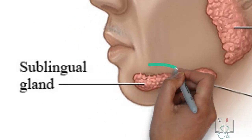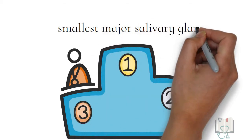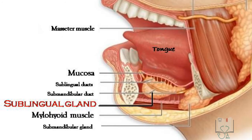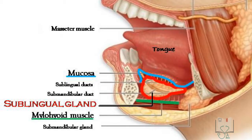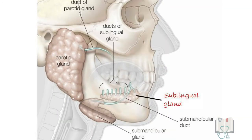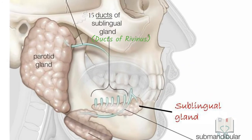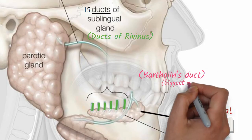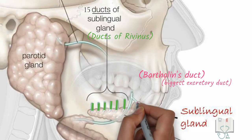The sublingual gland lies just beneath the tongue. It is the smallest major salivary gland, almond-shaped, and weighs just around four grams. It is located between the mucosa of the floor of the mouth above and the mylohyoid muscle below. The sublingual gland contributes only 5% of the total saliva, which is mucous in nature. It has several small excretory ducts — around 15 in number — collectively called the ducts of Rivinus, which all open directly into the floor of the mouth.